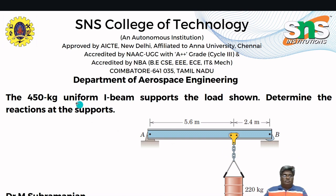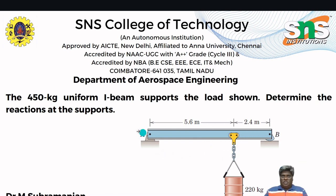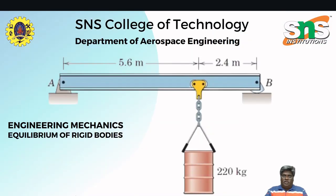Considering the problem: the 450 kg uniform I-beam supports the load shown in the figure. Determine the reaction at the supports. The total span is 5.6 plus 2.4 meters, giving a total beam length of 8 meters. The problem shows two supports: support A is a hinged support, and support B is a roller support. The first step is to draw the free body diagram.